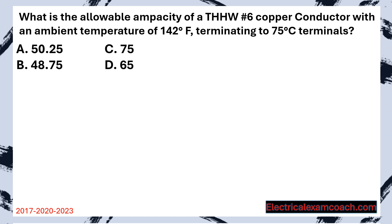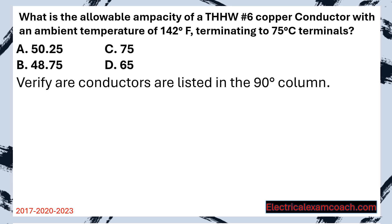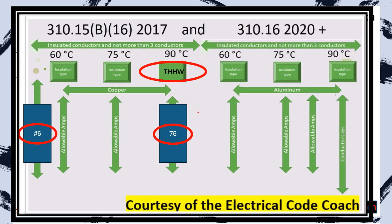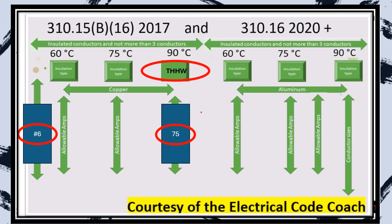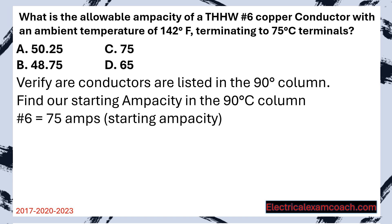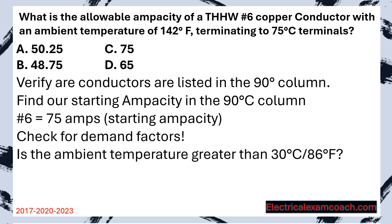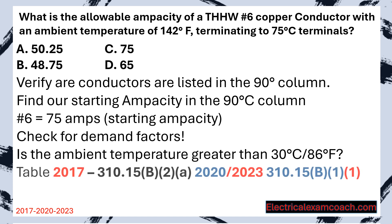Practice problem: What is the allowable ampacity of a THHW No. 6 copper conductor with an ambient temperature of 142 degrees Fahrenheit, terminating to 75 degrees C terminals? Step 1, verify the conductor is listed in the 90 degrees C column — head to the table, look for THHW, and sure enough it's there. Now find the starting ampacity in the 90 degrees C column: find No. 6, cross over, and the ampacity is 75 amps. Now check for demand factors — is the ambient temperature greater than 86 degrees Fahrenheit? It is, so there will be a demand factor.